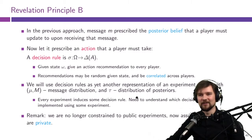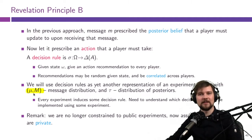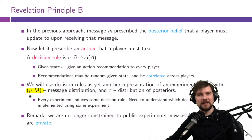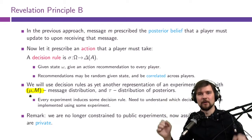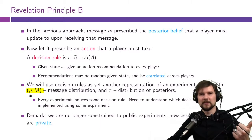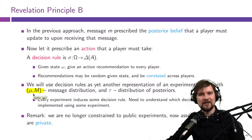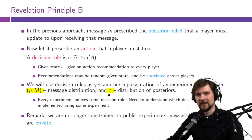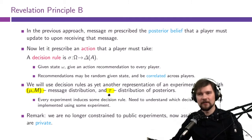We will use these decision rules as yet another representation of an experiment. To recap: we defined an experiment as a pair (μ, M) — the set of possible messages and a mapping from states into distributions over message profiles. This is the broadest representation. With Revelation Principle 1, we said we can represent the whole experiment as τ, a distribution over posteriors that players can have — different τs are different experiments.